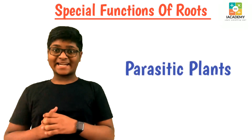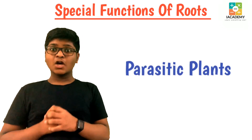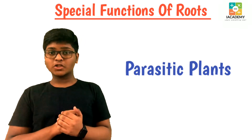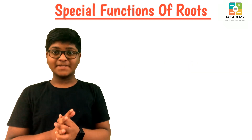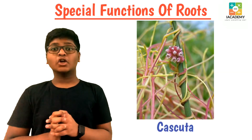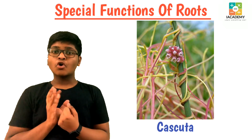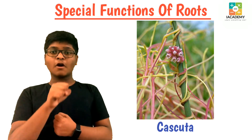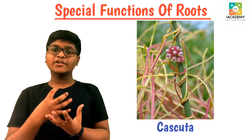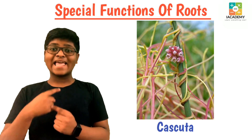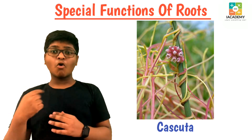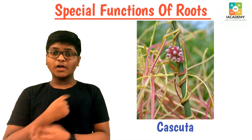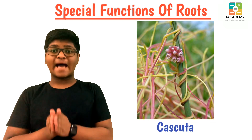Let us learn about parasitic plants. Parasitic plants absorb water, food, or both from the host plant and use it for themselves. For example, Cuscuta europaea, also called the dodder plant. They have special roots called haustoria which help to draw water, minerals, and food from the host plant. The dodder plant is a complete stem parasite.